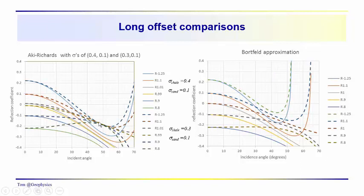The Aki-Richards tends to pinch out. We can see where that pinching occurs - all the responses for the 0.3, 0.1 Poisson ratio distribution come together around 50 degrees, then they diverge dramatically as we get up to around 54, 55 degrees. We see this divergence also in the Bortfeld approximation, but they don't really pinch together as they did for the Aki-Richards approximation at the longer offsets.